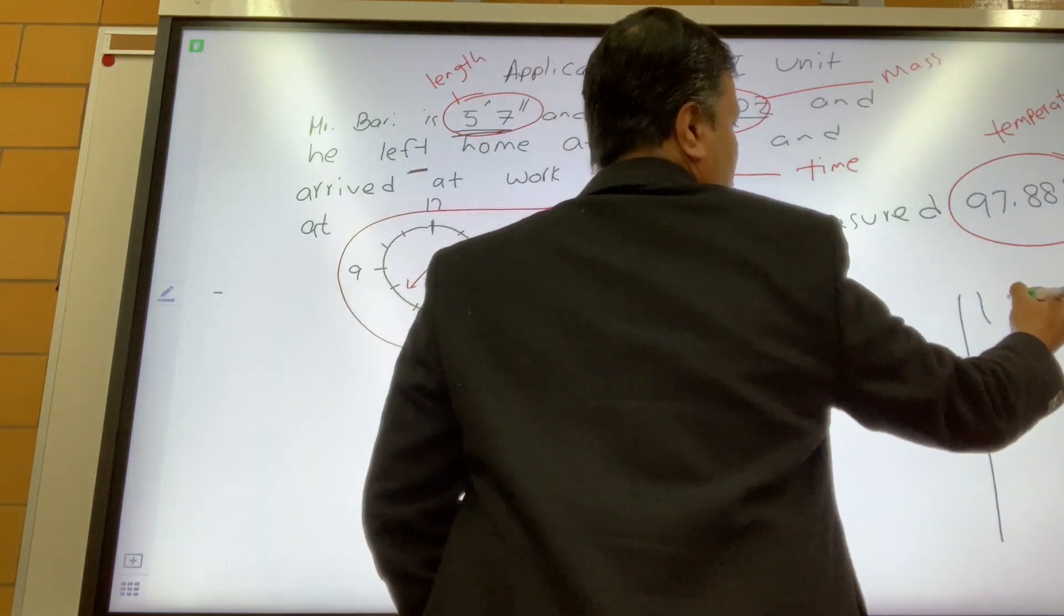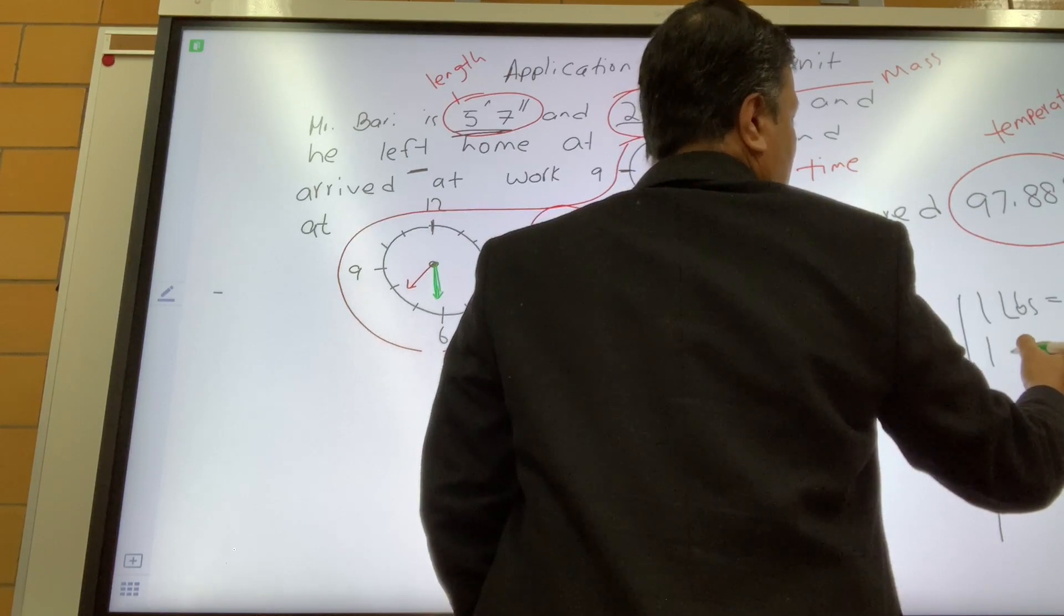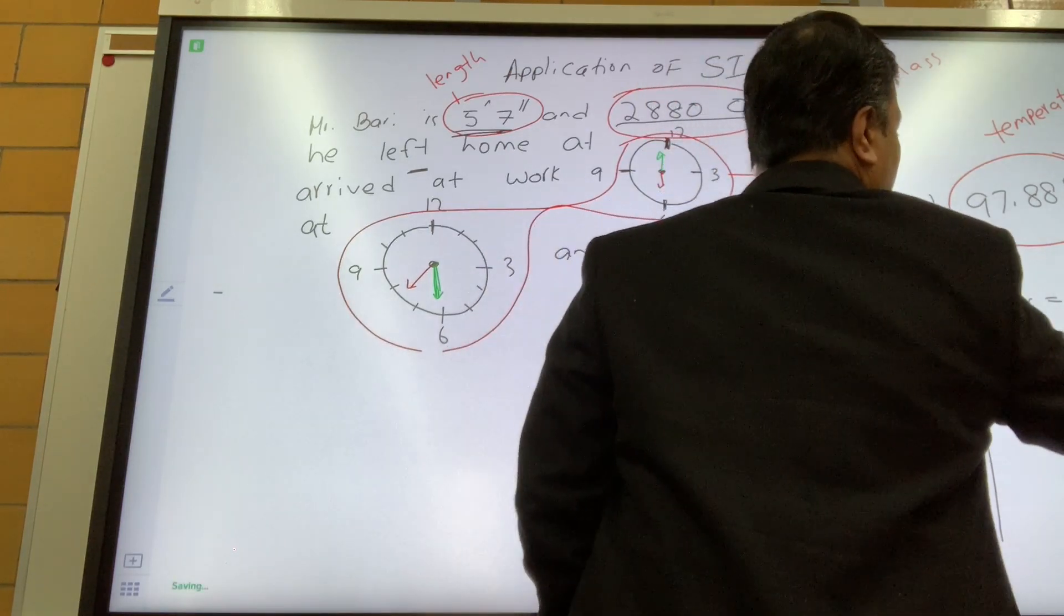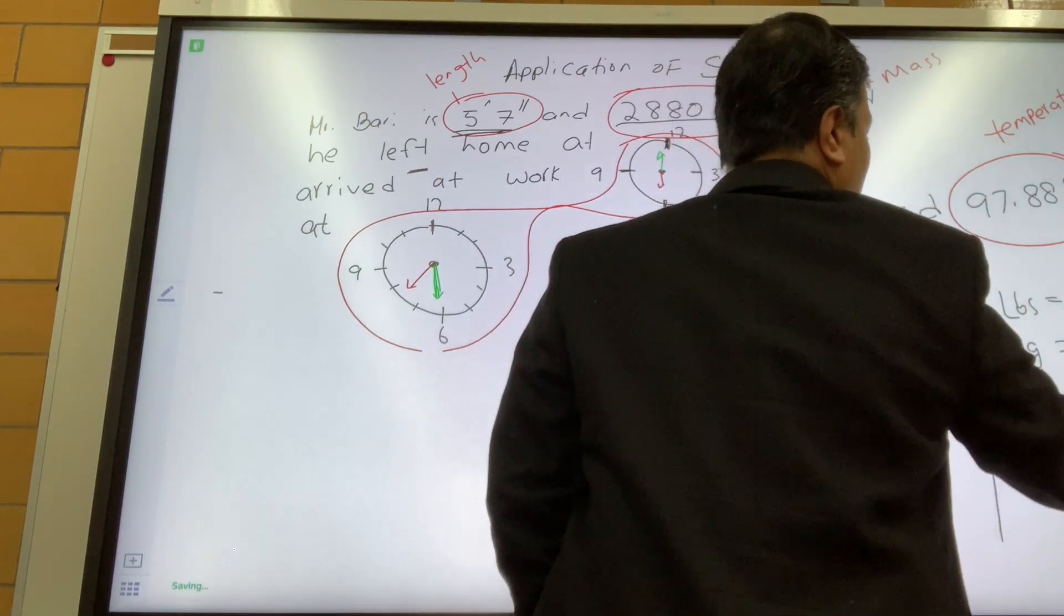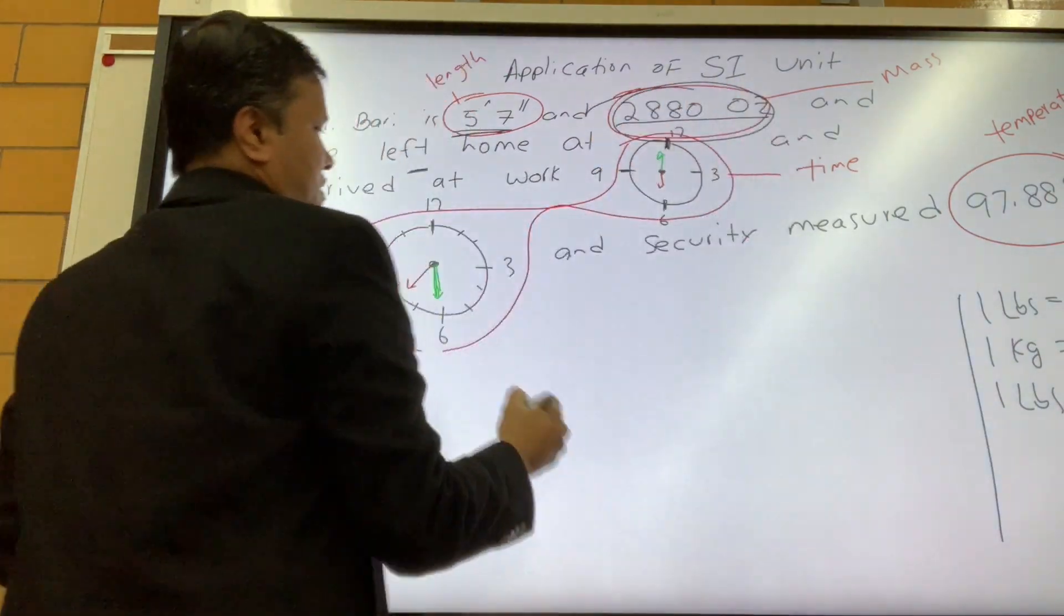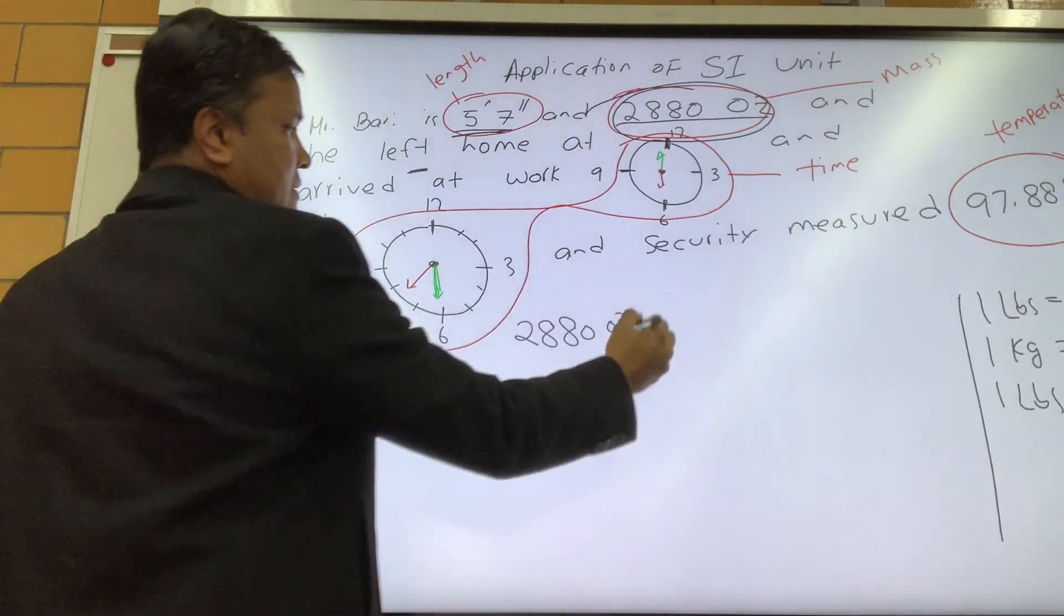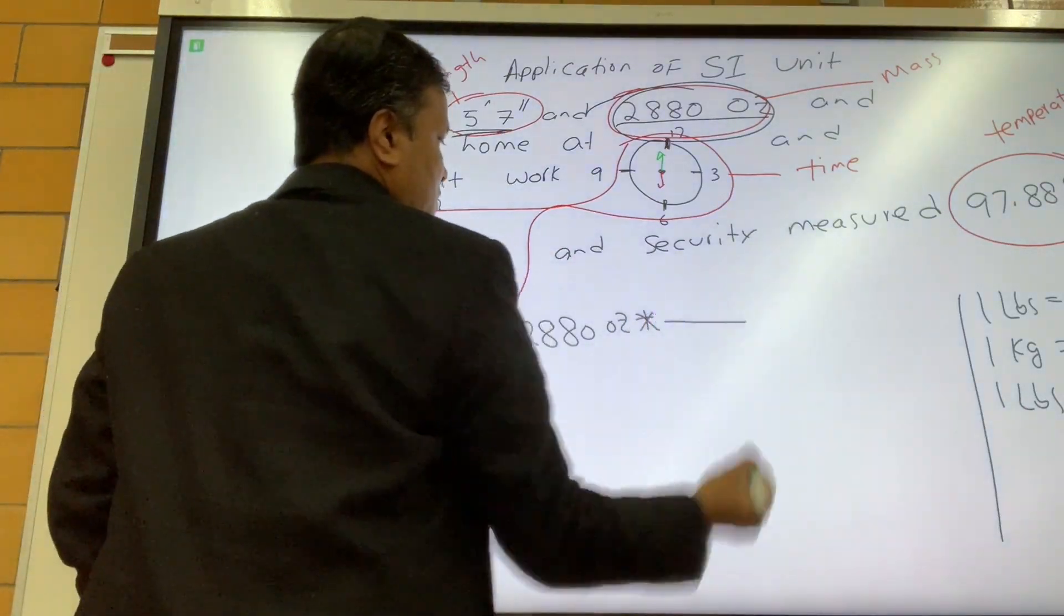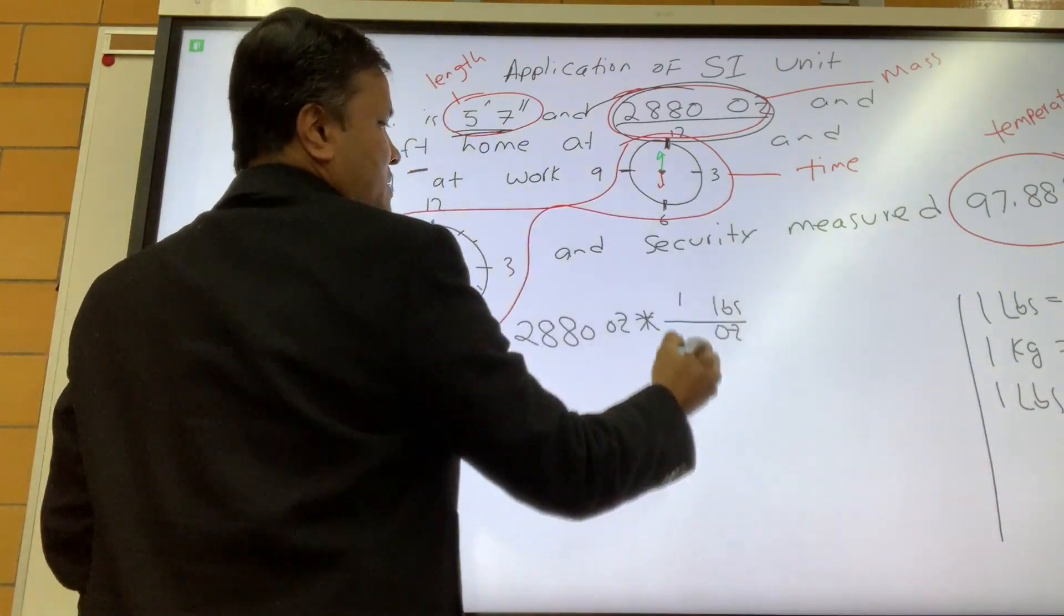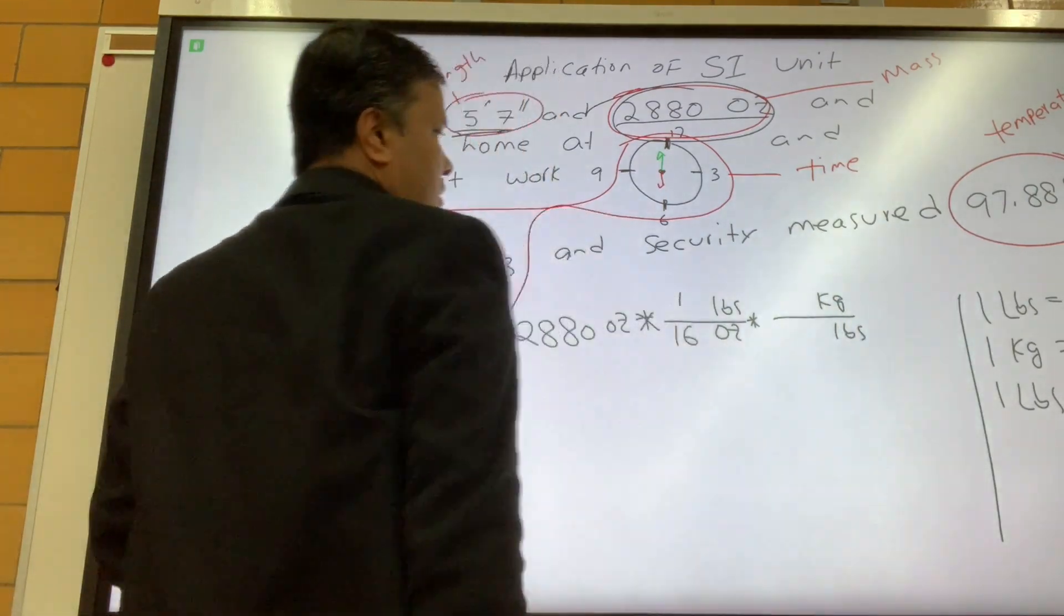Now let's convert the mass. One pound, we know that one pound is 16 ounces, and one kilogram is 2.2 pound, and one pound is 0.44 kilograms. So 2,880 ounce, we're gonna first convert it to pound, so the pound on the top and ounce on the bottom. One pound is 16 ounce.